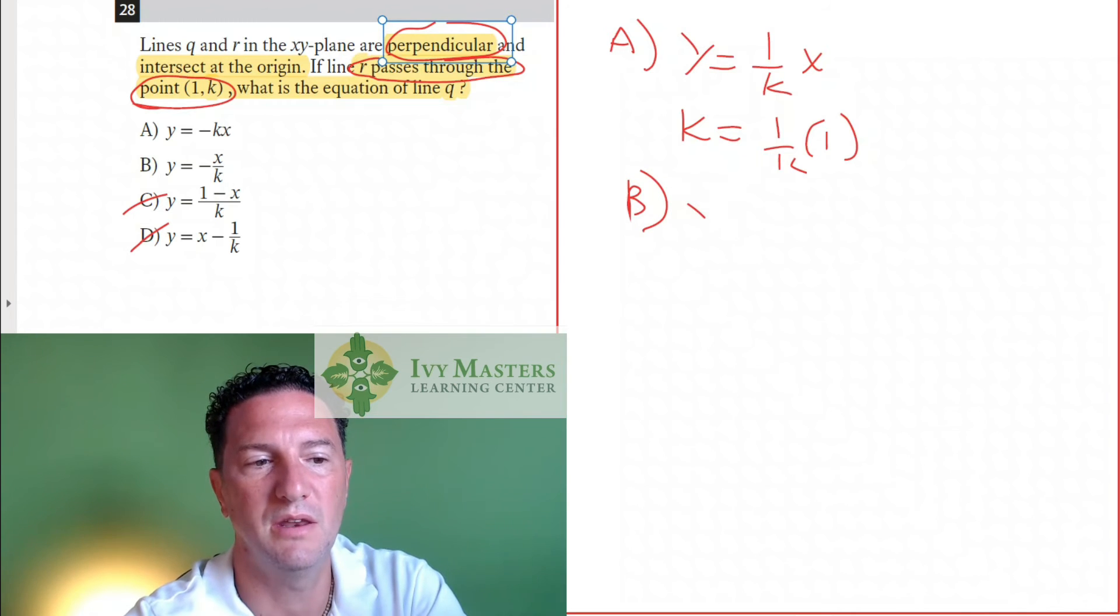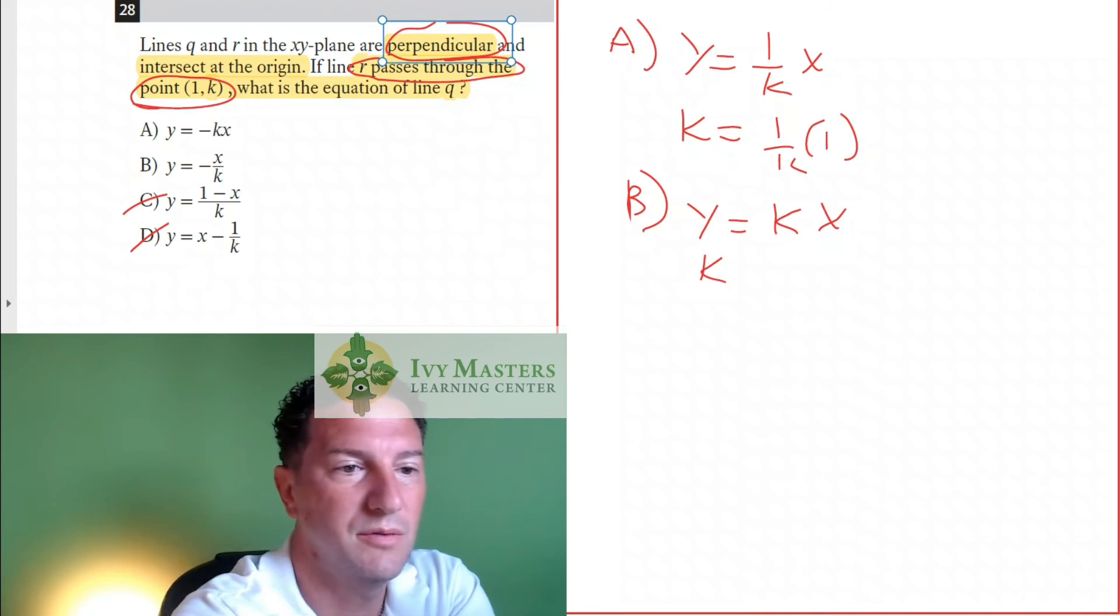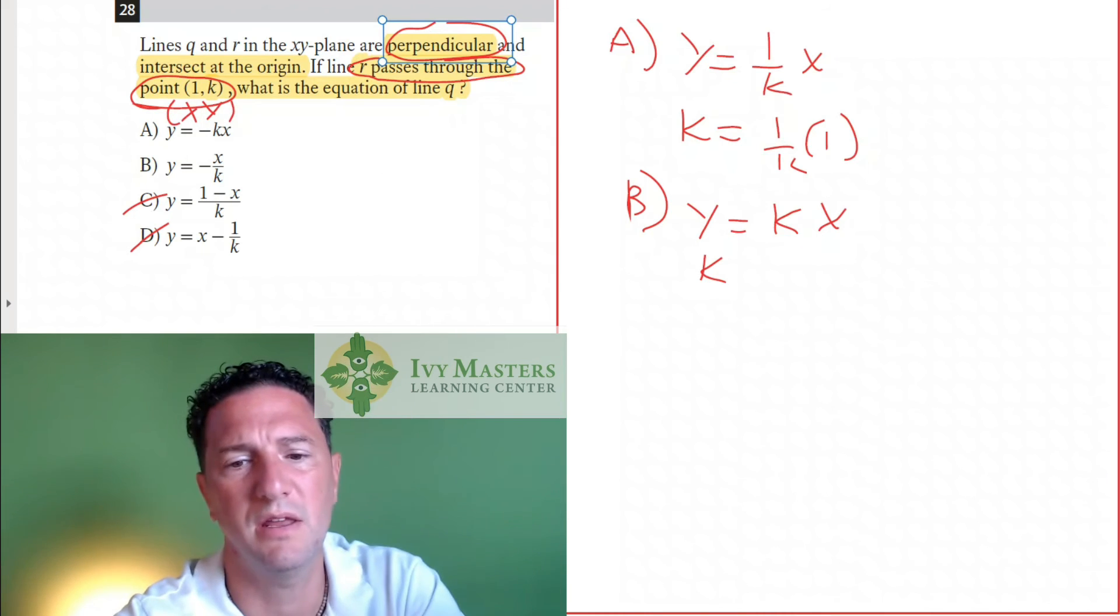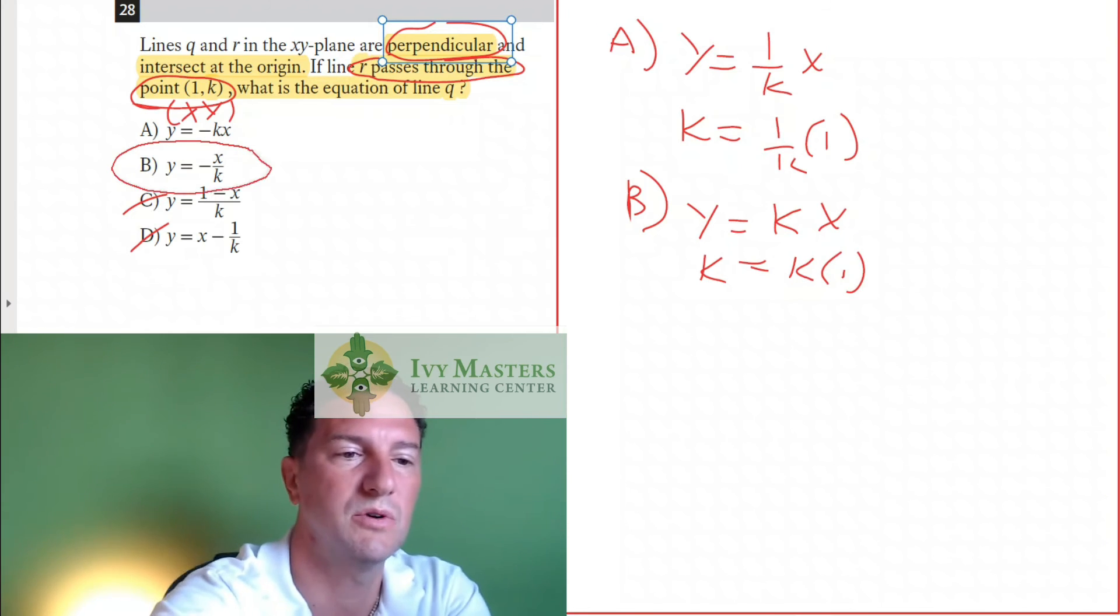And for B, what we get is y equals, and the slope here is actually negative 1 over k. So the opposite reciprocal is going to be k times x. So if I put k for y and 1 for x, k equals k. B is your answer.